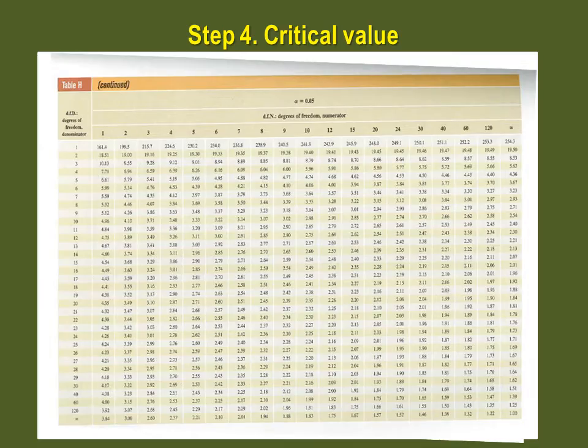We can now go into the F table to find the critical value. The ANOVA technique is considered a right-tailed test. Yes, even if the alternative hypothesis seems to reflect a two-tailed test. We can choose the F table with our significance level, so 0.05.